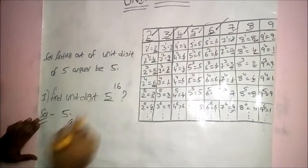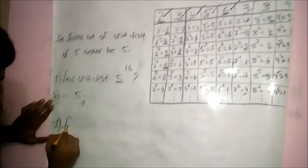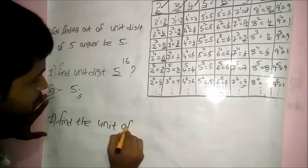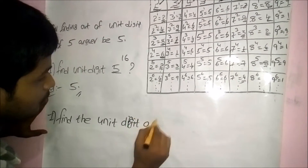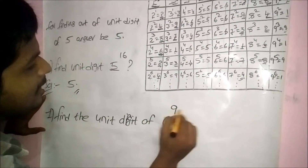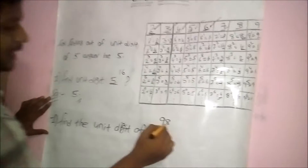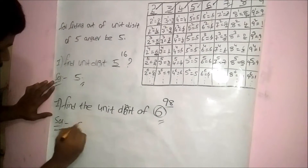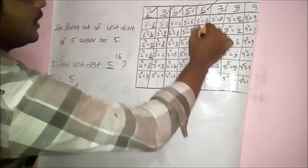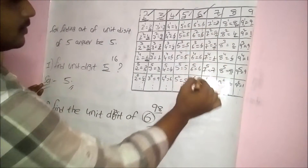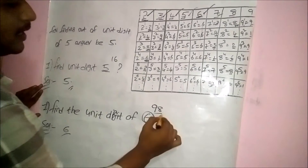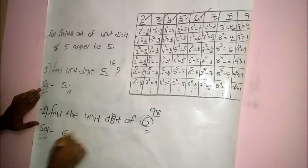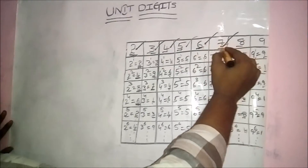For base 6: find the unit digit of 6 power 98. Irrespective of the power, since the base is 6 the answer is always 6. Look at the table — the unit digit of every power of 6 is 6, 6, 6, 6 and so on. So the answer is 6.